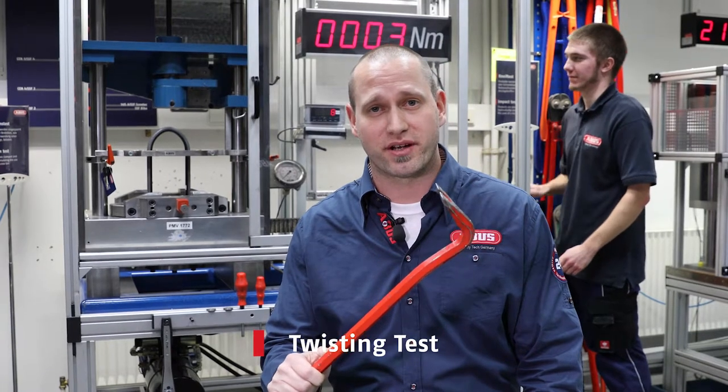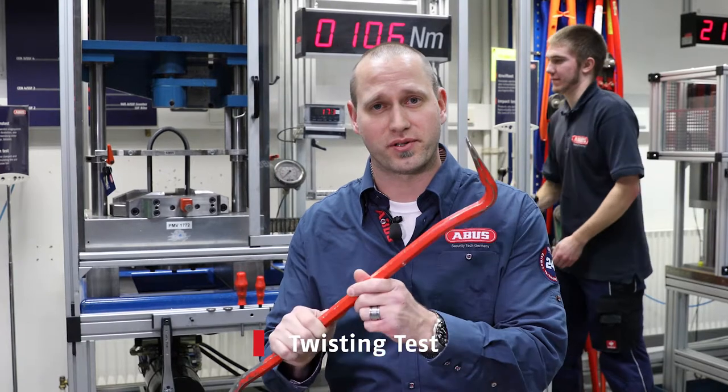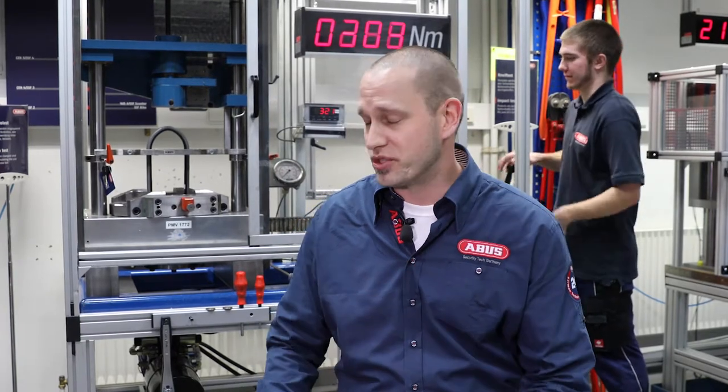Another common way a thief is going to try to steal your bike is a crowbar or a pry bar. The machine behind me, we're testing the ABUS Granite X Plus 540 against twisting attacks.